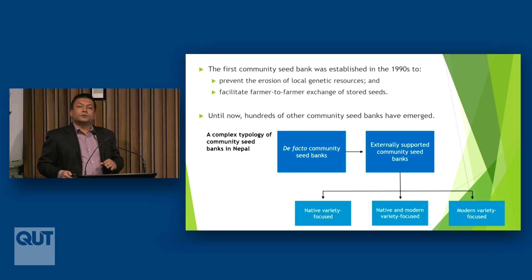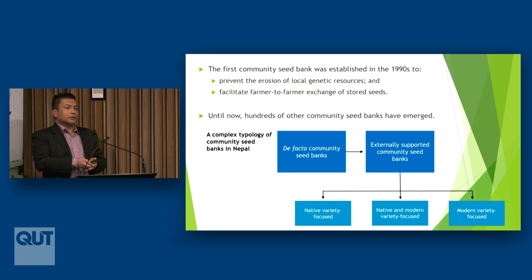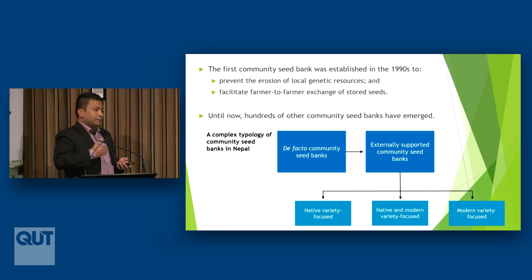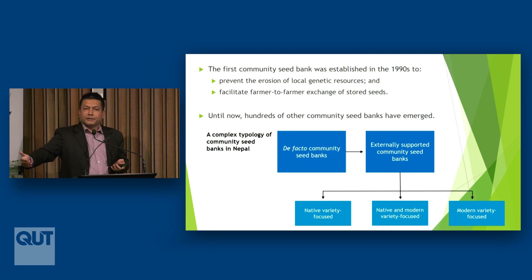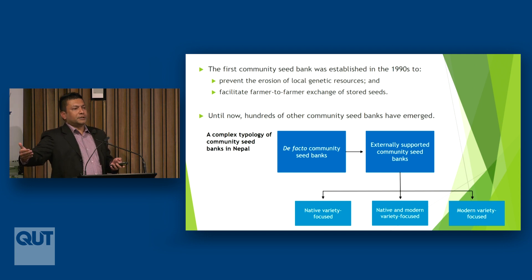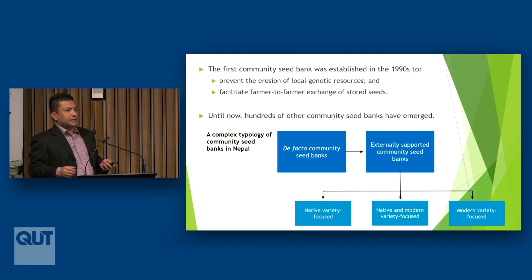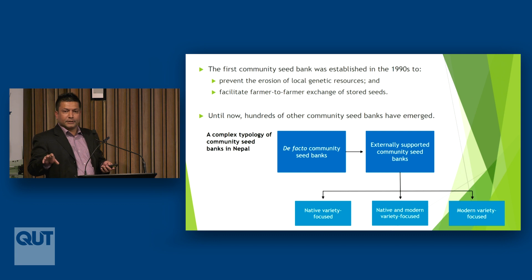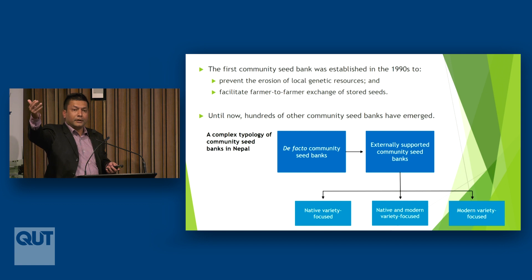The idea was to prevent the erosion of local genetic resources because farmers were gradually inclining towards modern plant varieties supplied by private seed traders or government bodies through seed distribution programs. At that time, USC Canada, an international agency, worked with local communities to form that community seed bank in Nepal, focusing exclusively on the maintenance and conservation of local plant genetic diversity, not on any genetic resources derived or imported from outside.